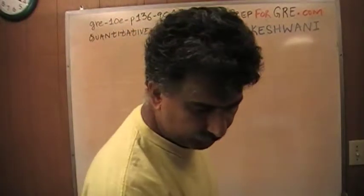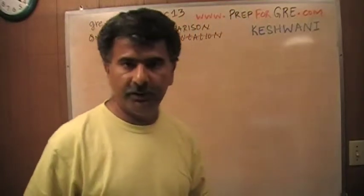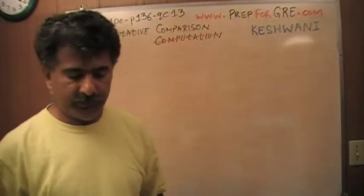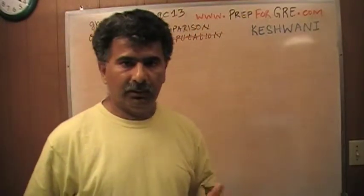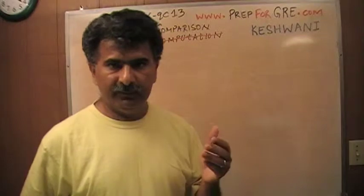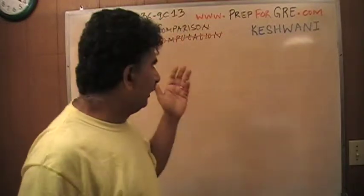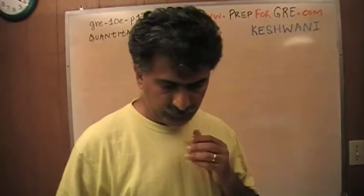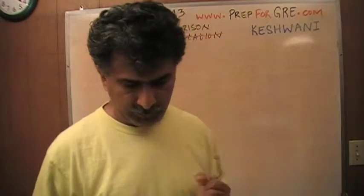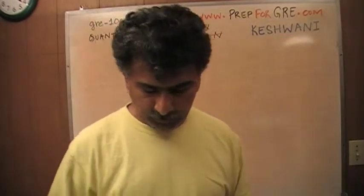There are two types of questions they give you in the GRE for the math section. The first kind is the standard multiple choice questions that everybody is familiar with, and then they have this format where you're supposed to compare two quantities. Number 13 — let's take a look at it.